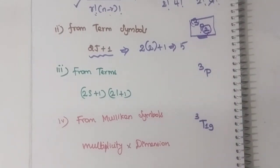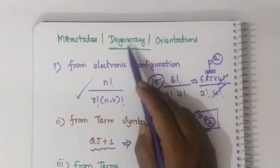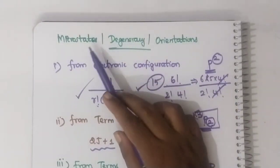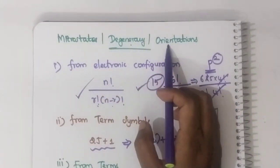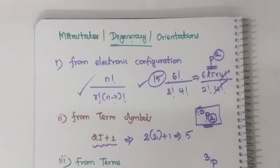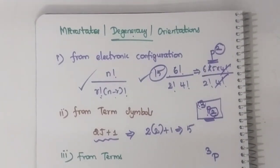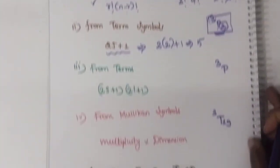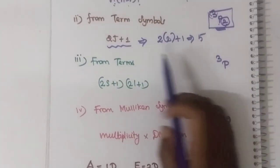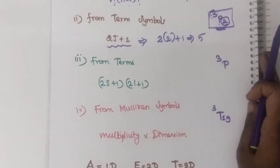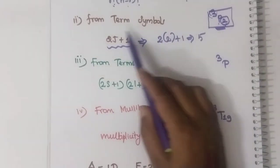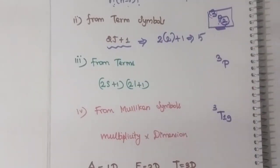Microstates, degeneracy, orientations, and arrangements are all the same - nothing but the arrangements of electrons, the possible ways of filling the electrons. In the case of a term symbol, this is how you calculate using the formula 2J plus 1.